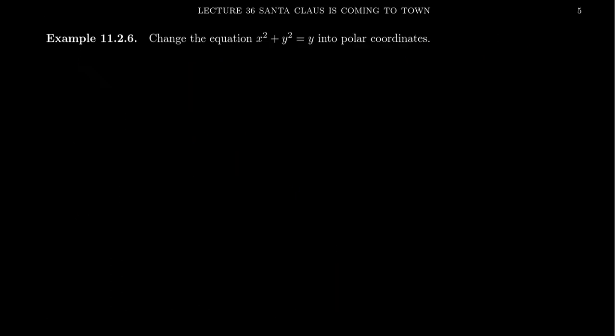But what if we want to go the other direction? What if we have a Cartesian equation and we want to put it into polar form? Well, the trick here of course is that anytime you see an x, replace it with r cos θ. Whenever you see a y, replace it with r sin θ. So when you see that y on the right hand side, you're just going to replace that with r sin θ. And you can do that on the right hand side as well.